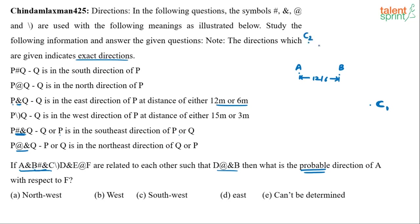So A and B are fixed — there's only one possible relationship between them. But C has two possible positions: C1 or C2. When we take C1, C is in the southeast of B. When we take C2, B is in the southeast of C. We trace both possibilities on the same map.